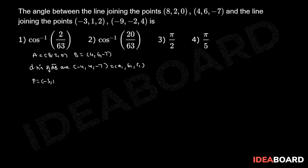Let P equals (-3, 1, 2) and Q equals (-9, -2, 4) with the given points. Now direction ratios of PQ are -6, -3, 2. Let us assume this as A2, B2, C2.